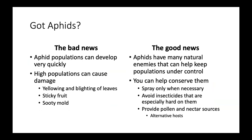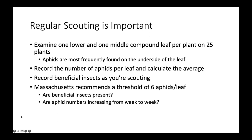The bad news with aphids is that populations can develop very quickly. High populations cause damage including leaf yellowing, blighting, sticky fruit, and sooty mold. The good news is that aphids have many natural enemies that can help keep populations under control. The poll asks whether people see aphids every year or just some years. If you can conserve natural enemies by spraying only when necessary, avoiding pyrethroids, and providing pollen and nectar sources for beneficials, many years you might not have to spray for aphids at all.